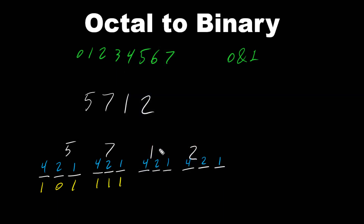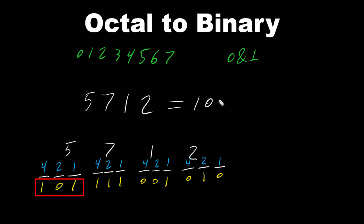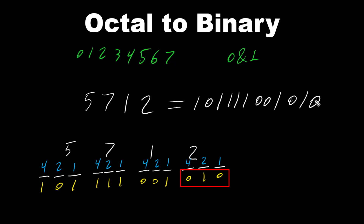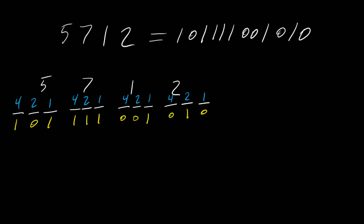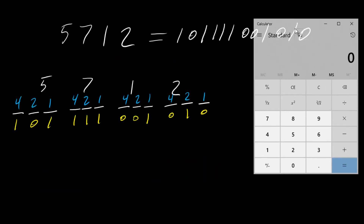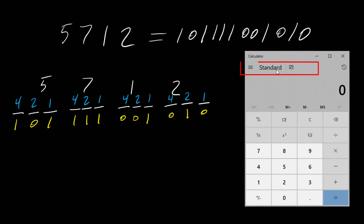For digit 1, only one bit is turned on, and for 2, only the two bit is turned on. So the pattern is: off, on, off. Therefore the octal number 5 7 1 2 is equivalent to the binary number 1 0 1 1 1 1 0 0 1 0 1 0.